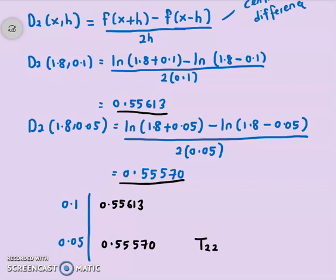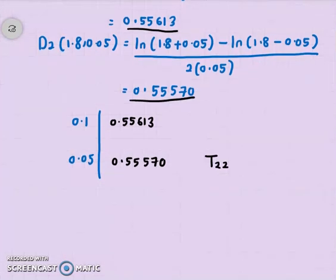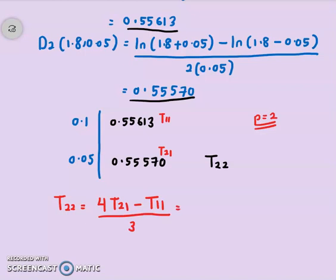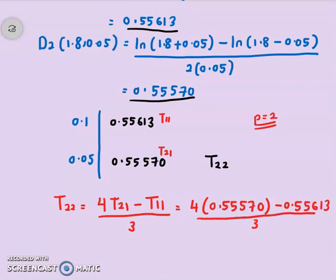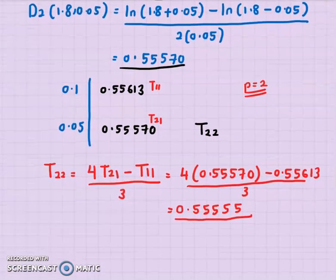For extrapolation with D2: T21 = 0.55613 (h=0.1) and T21 = 0.55570 (h=0.05). Since D2 is order 2, p=2, so the extrapolation formula uses a factor of 4: T22 = (4×0.55570 - 0.55613) / 3 = 0.55555. Wow — this is very accurate to 5 decimal places!